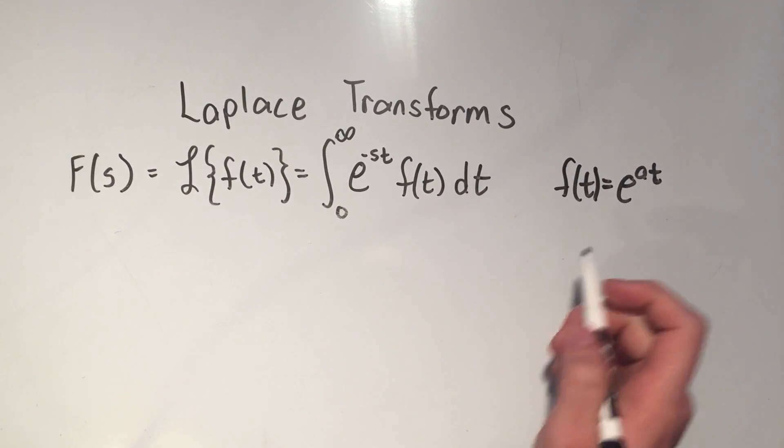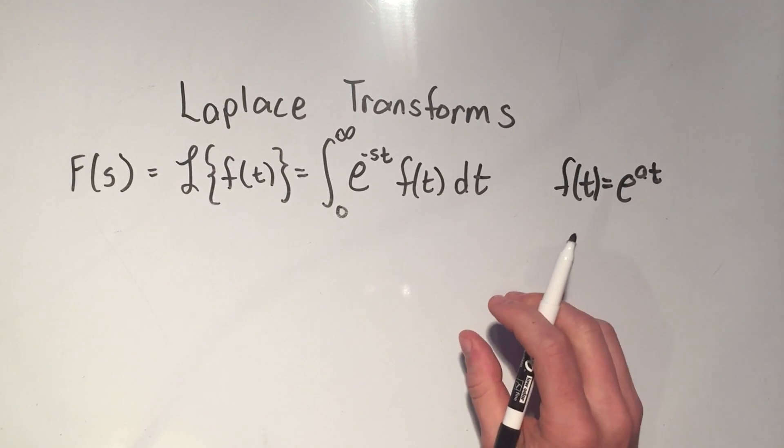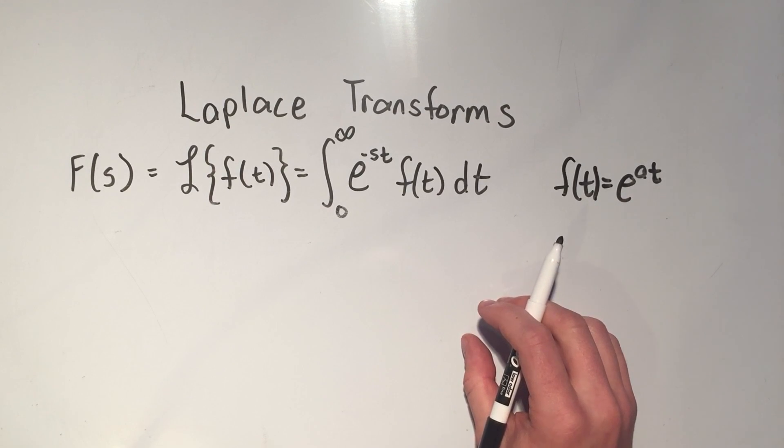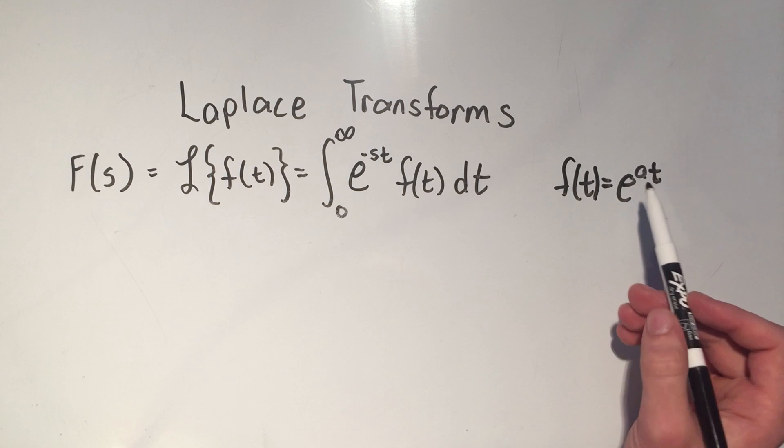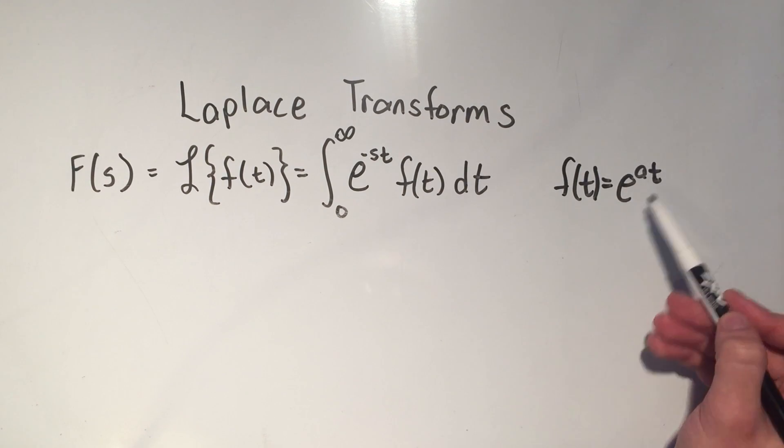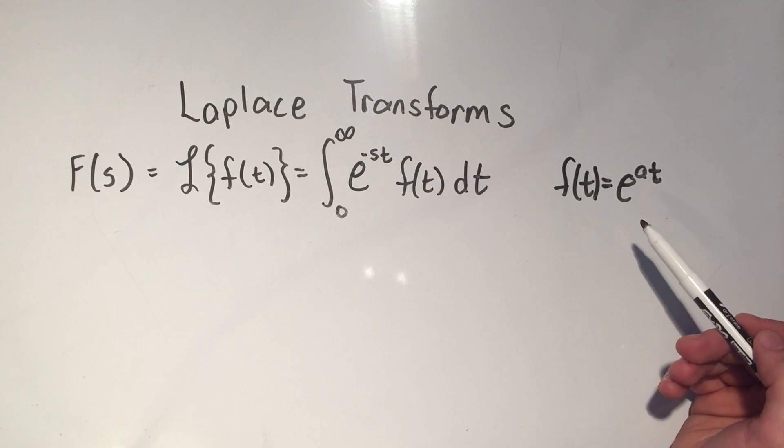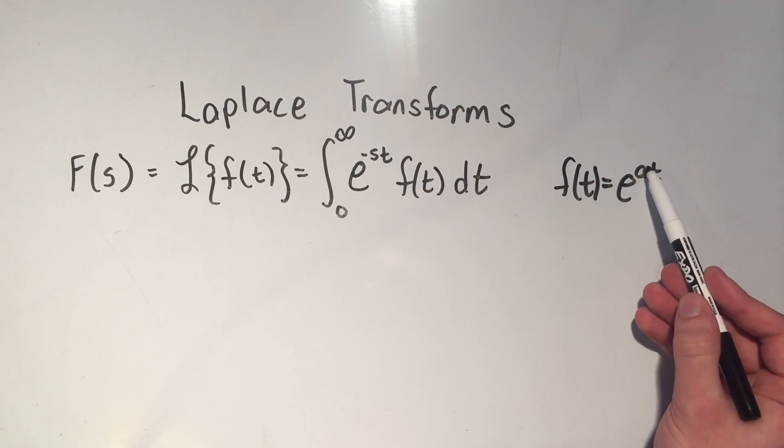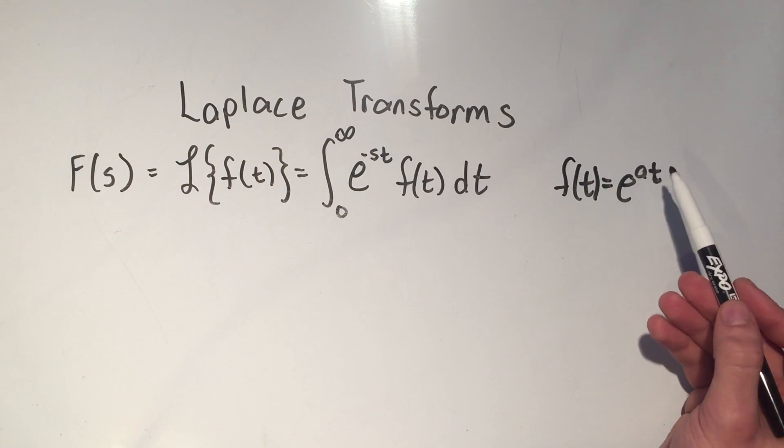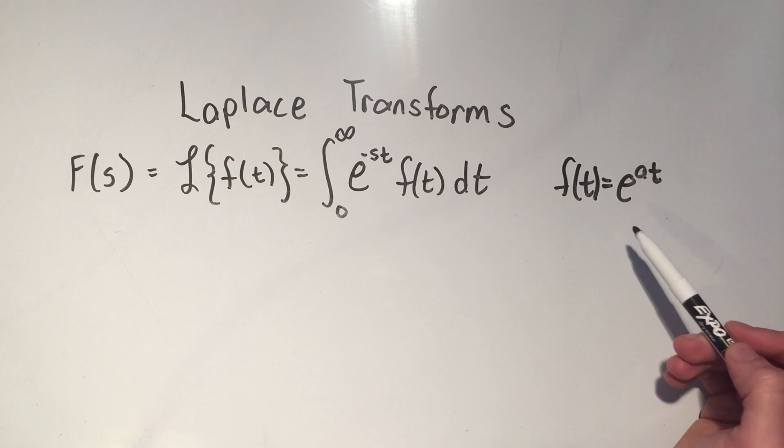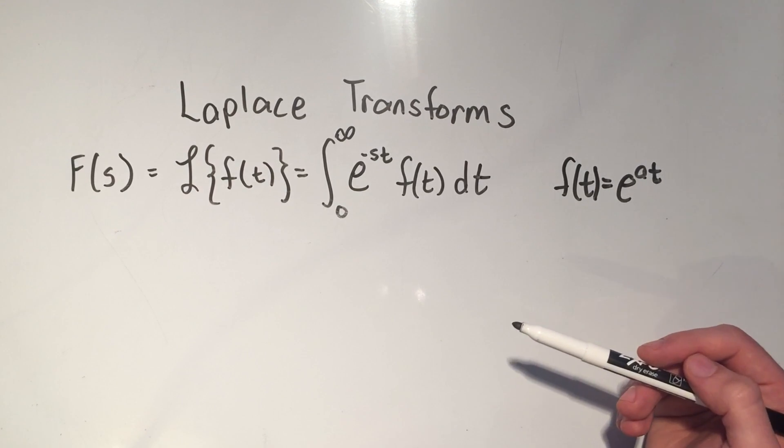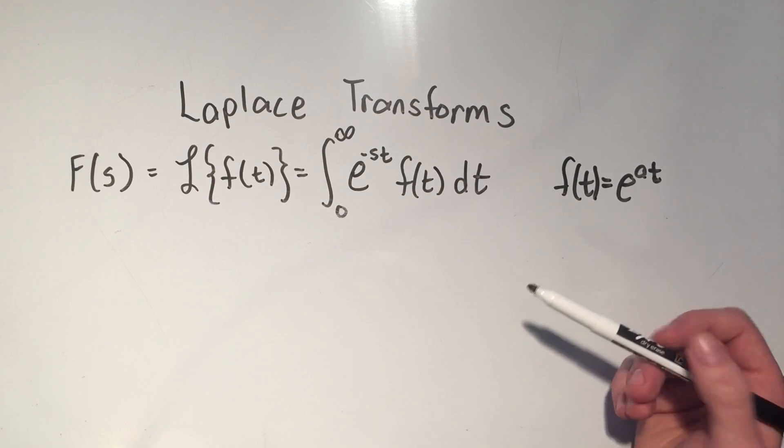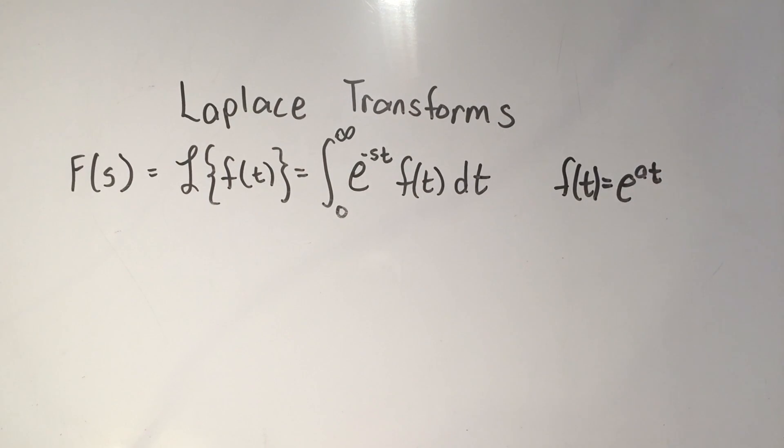In this video, I want to take the Laplace transform of e to the at using the definition of the Laplace transform, where a is a constant. Now you might ask, why don't I just do the Laplace transform of e to the t? Well, that's because when you're taking Laplace transforms, there could be a whole bunch of different a's. You might have e to the t, e to the 5t, or e to the minus 10t. So I want to do it for a general a here. And when you look at Laplace transform tables, you're going to see e to the at.